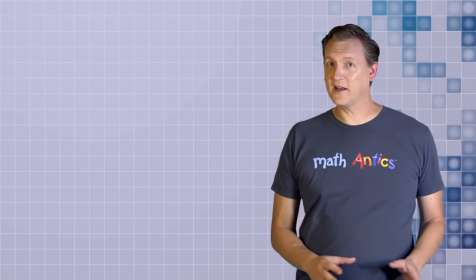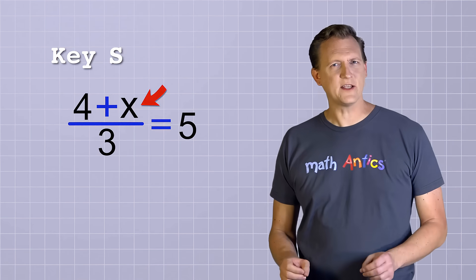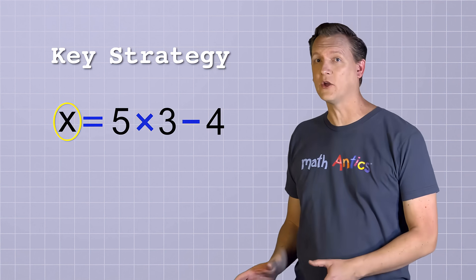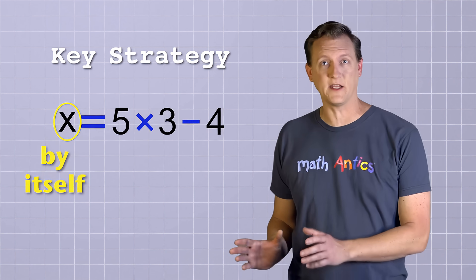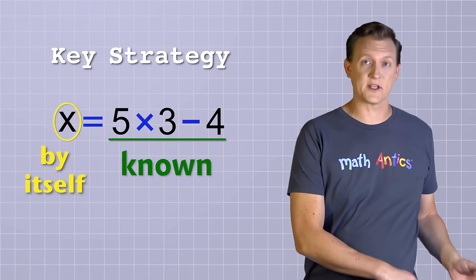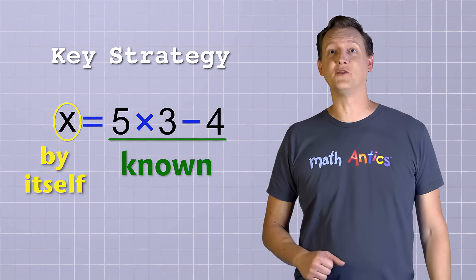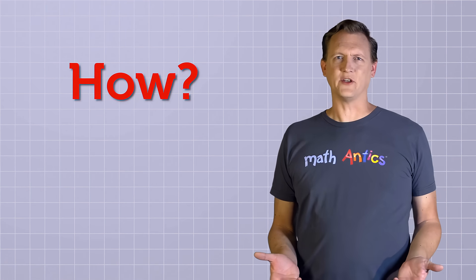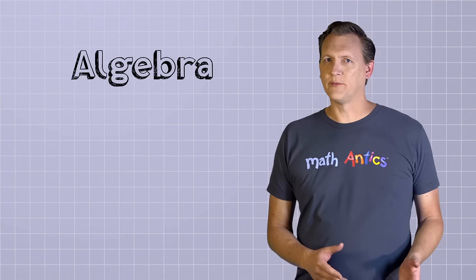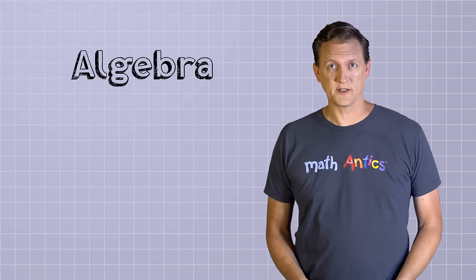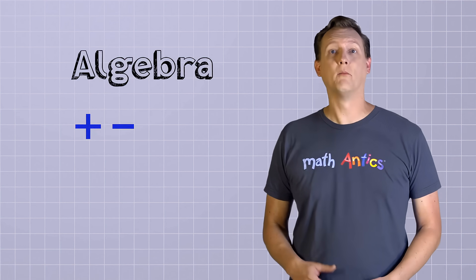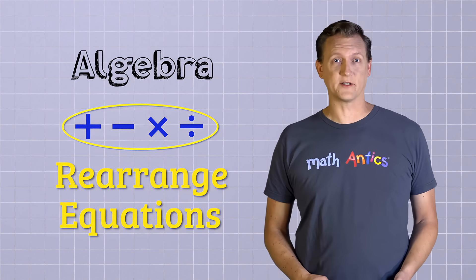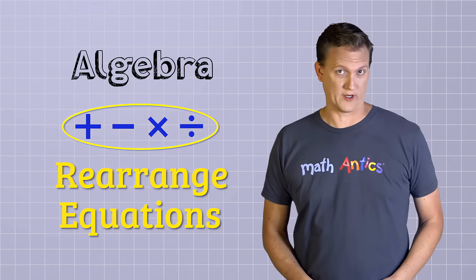If you've got an equation that has an unknown value in it, the key strategy for solving it is to rearrange the equation until you have the unknown value all by itself on one side of the equal sign and all of the known numbers on the other side. Algebra uses the four main arithmetic operations — addition, subtraction, multiplication, and division — and we can use those operations to rearrange equations, as long as we understand one really important thing first.